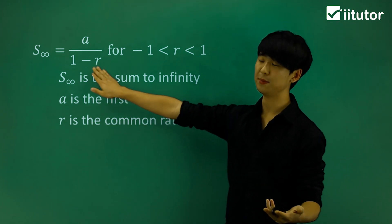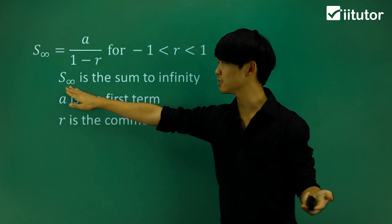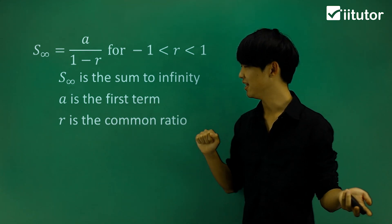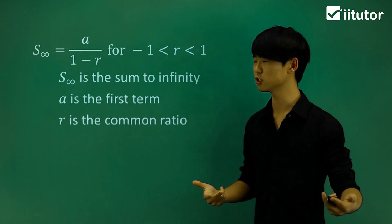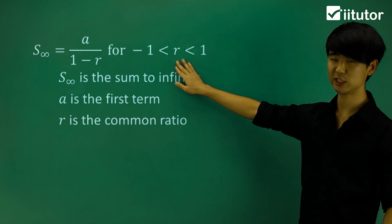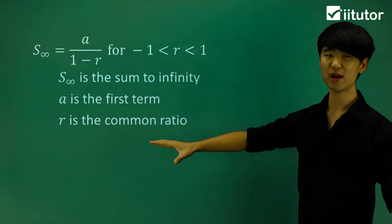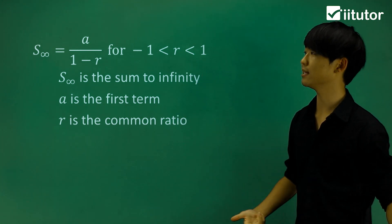This is my limiting sum formula. S∞ is the sum to infinity. We should know that a is the first term and r is the common ratio. Because this is a limiting sum, the common ratio should be between negative 1 and 1. Let's apply this to answer some questions.